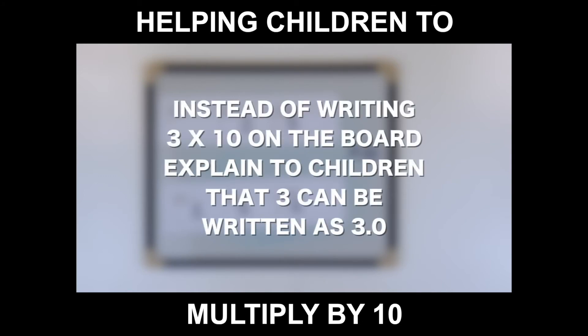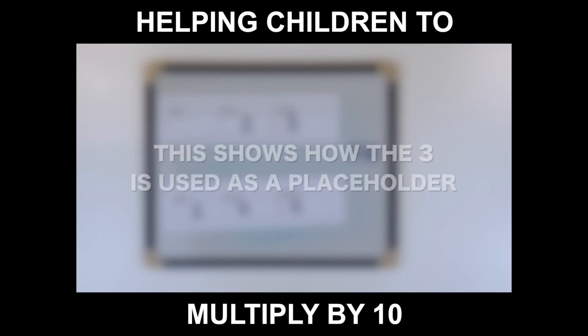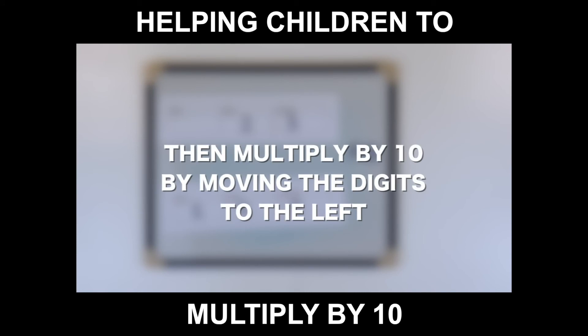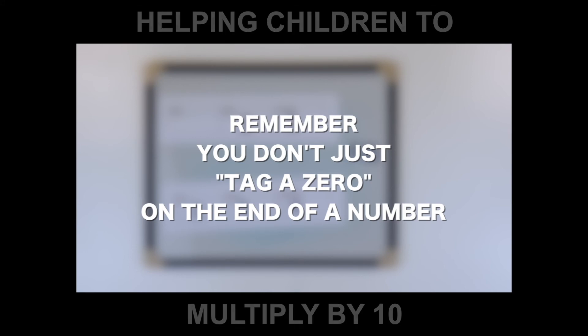Instead of writing 3 times 10 on the board, explain to children that 3 can be written as 3.0. This shows how the 3 is used as a placeholder. Then multiply by 10 by moving the digits to the left. Remember, you don't just tag a zero on the end of a number.